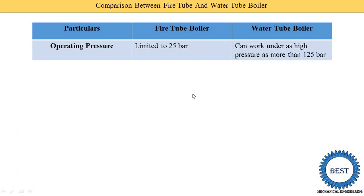This is the first comparison. The second comparison is on the basis of operating pressure — meaning the pressure at which the boiler is working. Fire tube boiler is operated at limited to 25 bar, meaning up to 25 bar the fire tube boiler works. And water tube boiler can work under as high pressure as more than 125 bar. This is the range of pressure for both boilers.